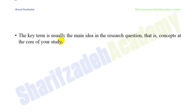Most of the time, the key terms are the variables. Key terms or variables are the main ideas that frequently appear in your research. If a technical term appears most frequently — or is the second or third most frequent technical term — your text is essentially about it. So to distinguish key terms, look for the variables or the most commonly occurring technical terms in your text.